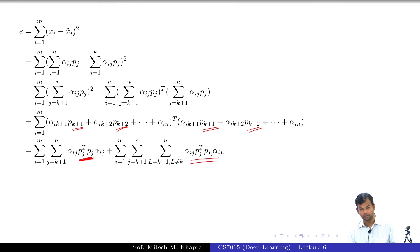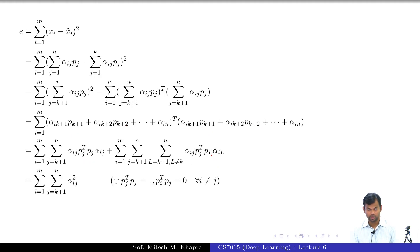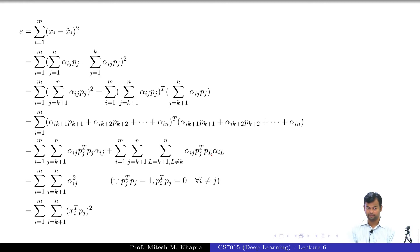The second term — where i is not equal to j — will go to 0. What about the first term? You get alpha_ij squared. Now, what is alpha_ij actually? How did you find alpha_ij? Finding any of these components is just taking the dot product between x_i and that dimension — so it is x_i transpose p_j.